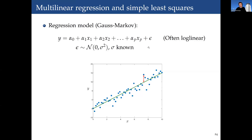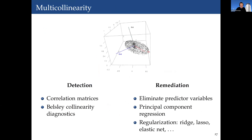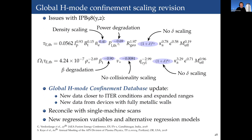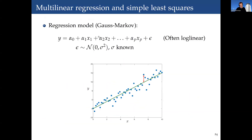Multilinear regression is one of the simplest regression models, where y depends linearly on multiple predictor variables — plasma current, magnetic field, plasma shape, heating power, and so on. Many scaling laws in fusion are assumed to be power laws: taking logarithms on both sides transforms a power law into a multilinear form. For instance, the confinement time scaling, when log-transformed, becomes exactly a multilinear model.